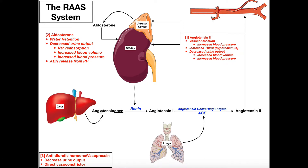Angiotensinogen is constitutively produced by the liver, meaning it's always produced at around the same level — it doesn't turn off and on. It's always being produced and you would find this protein in your blood right now. But if there's no renin, this protein doesn't do anything because it's inactive. However, when we have low blood volume and the kidneys release renin, renin converts angiotensinogen into angiotensin 1.